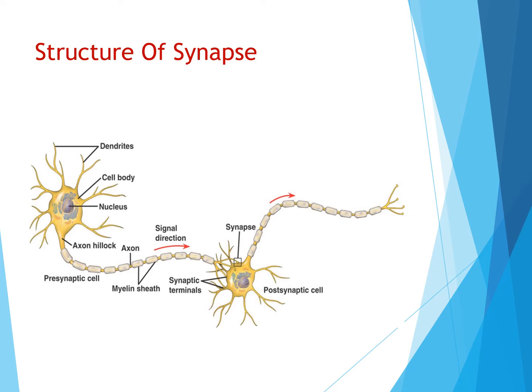So the nerve impulses can be transmitted from one cell to another cell. The axons connect with the dendrite parts of the other cell, forming a synapse.